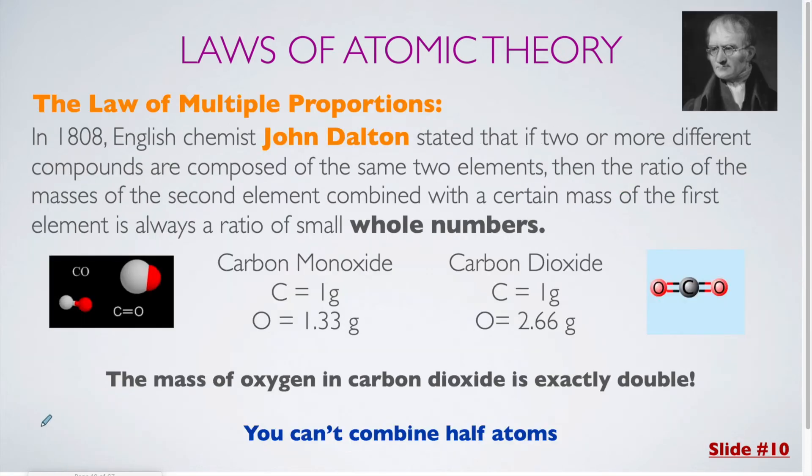Our third and final law for today is the law of multiple proportions. And this one was created by John Dalton in 1808. He stated that if two or more different compounds are composed of the same two elements, then the ratio of the masses of the second element combined with a certain mass of the first element is always a ratio of small whole numbers. Now I know that's a very long sentence and it might not make a whole lot of sense at first. So we're going to use this example right here to demonstrate what he's talking about.